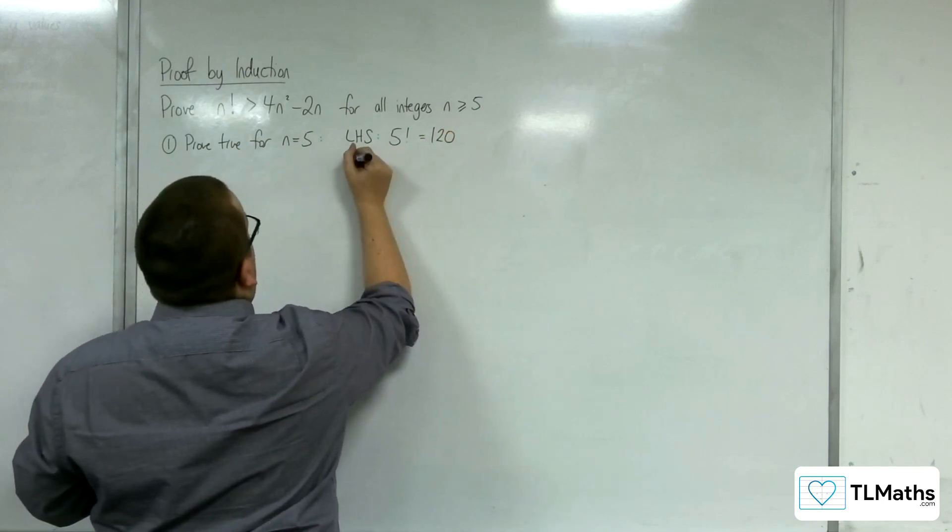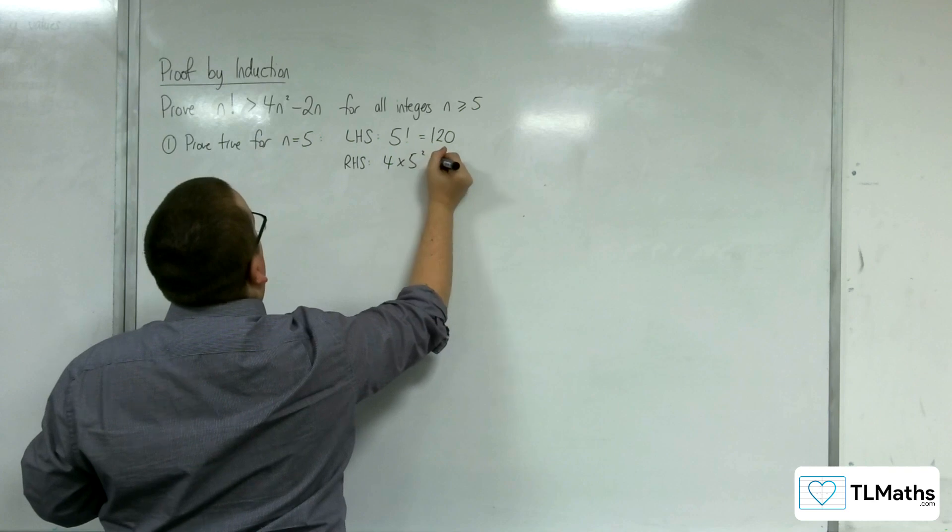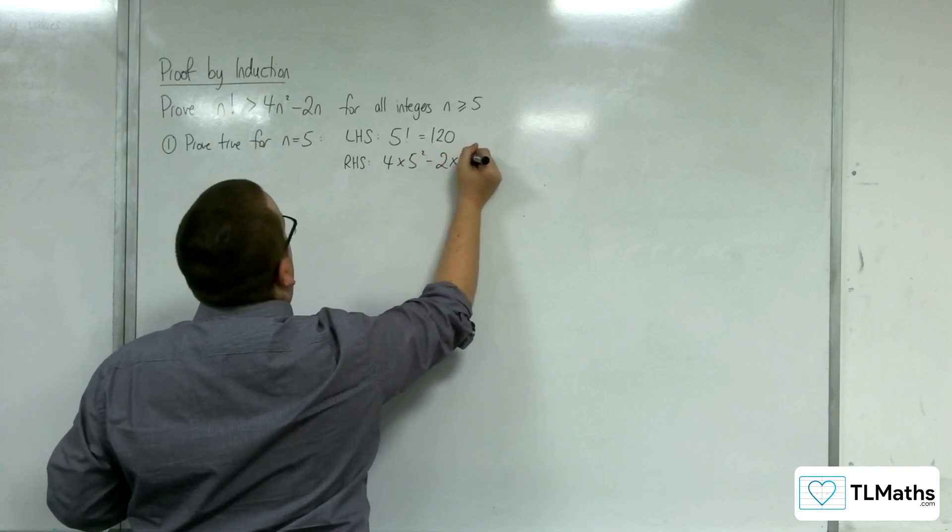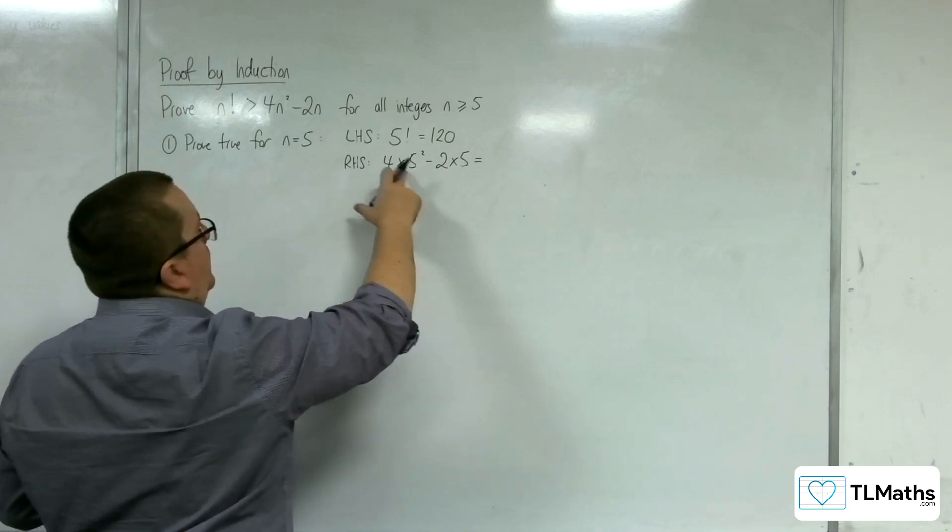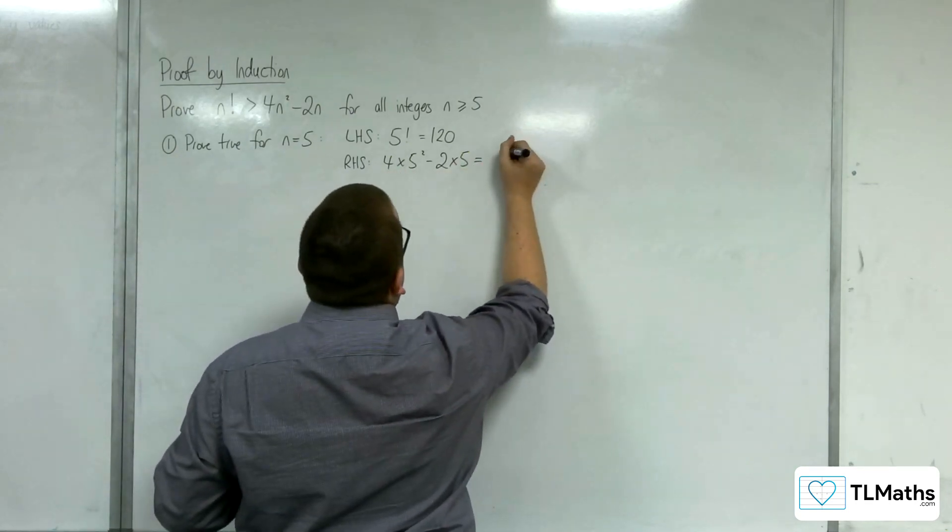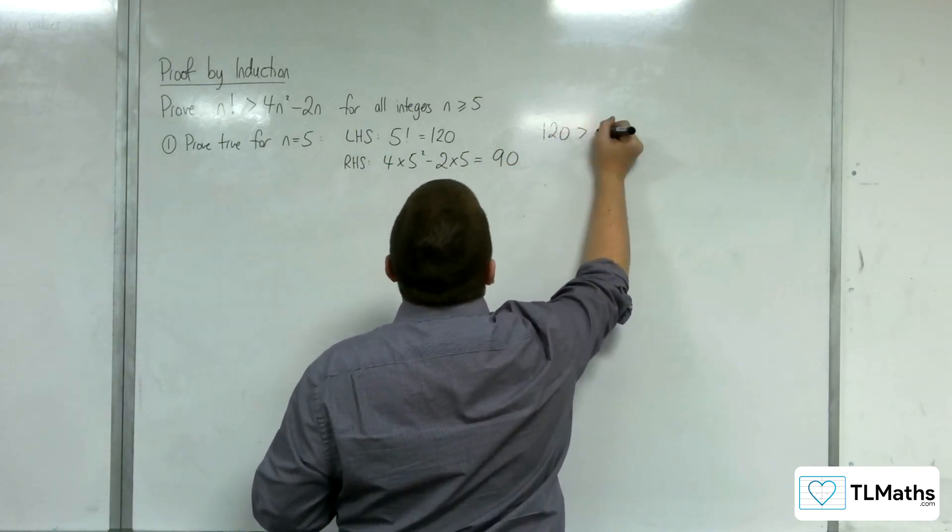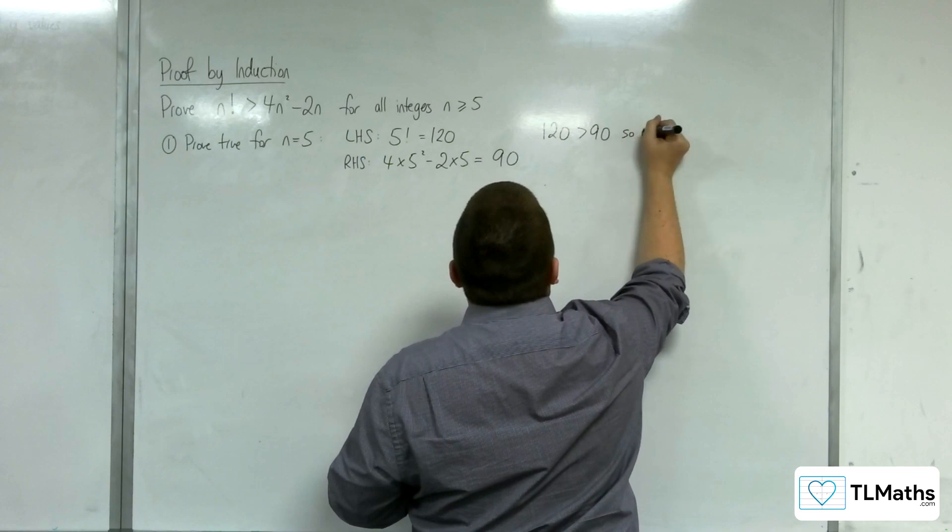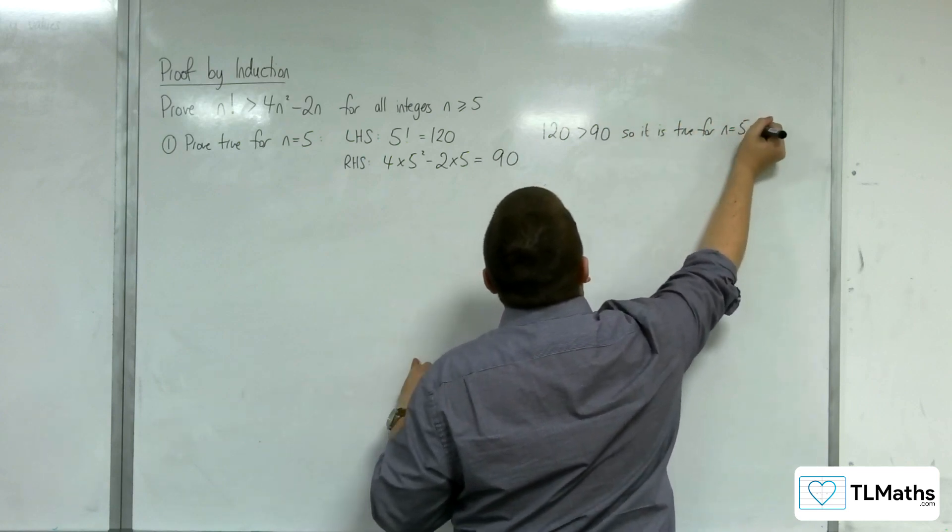And on the right hand side, we've got 4 lots of 5 squared take away 2 lots of 5. So 5 squared is 25, 4 lots of that is 100, 100 take away 10 is 90. So 120 is greater than 90, so it is true for n equals 5.